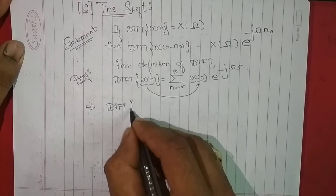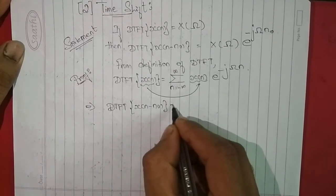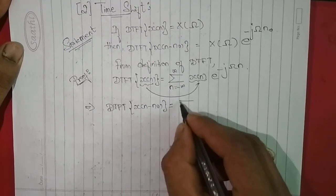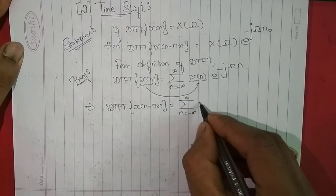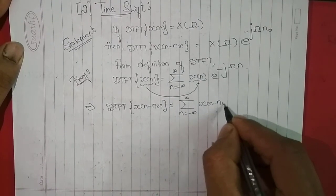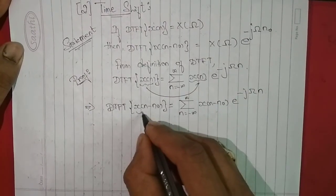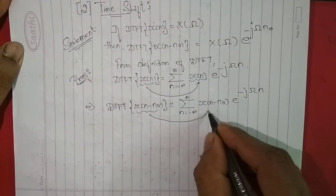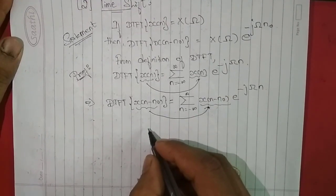of x(n-n0) is given by summation n varying from minus infinity to infinity, x(n-n0)e^(-jωn). So in the curly bracket we had x(n-n0), so we are putting here x(n-n0).